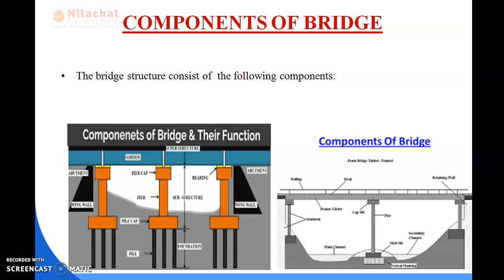The pier structure mainly has two functions: load transmission to the foundation and resistance to horizontal forces. Now we discuss the types of piers in bridge construction. Based on structural connectivity, piers can be classified as monolithic or cantilever. Based on the shape of the section, piers can be classified as solid or hollow, and hexagonal, round, octagonal, or rectangular. Based on the forming configuration, piers can be classified as single or multiple column, band, or pier wall type.